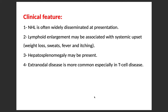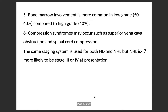Regarding clinical features, non-Hodgkin's lymphoma is often widely disseminated at the time of presentation. Lymphoid enlargement may be associated with systemic symptoms such as weight loss, sweating, fever, and itching. Hepatosplenomegaly may be present at the time of examination. Extranodal disease is more common, especially in T cell type disease. Bone marrow involvement is more common in low grade — about 50 to 60% — compared to high grade — about 10% — because high grade has an earlier presentation. Compression syndromes may occur such as superior vena caval obstruction and spinal cord compression.